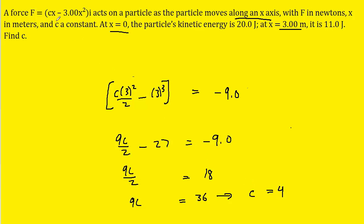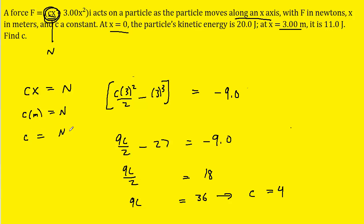As for the unit, we look at the force expression and note that the term cx must come out in newtons. Since x is a distance measured in meters, we have c times a meter equals newtons. Dividing both sides by a meter, we find the unit of c is newtons per meter. So our final answer is 4 newtons per meter.